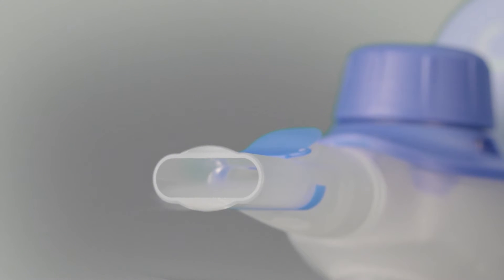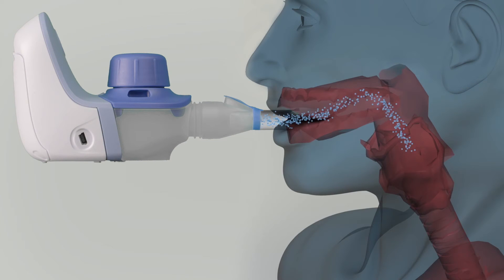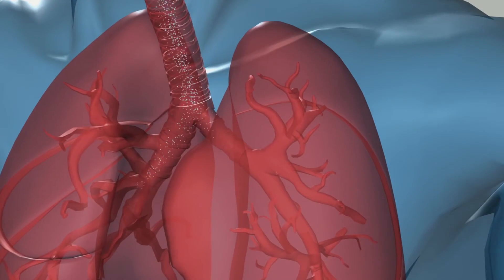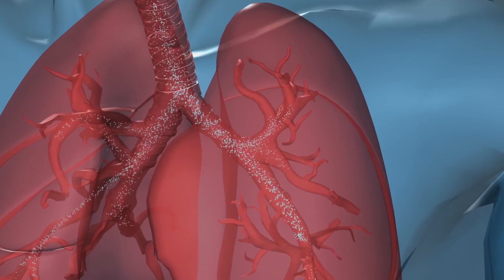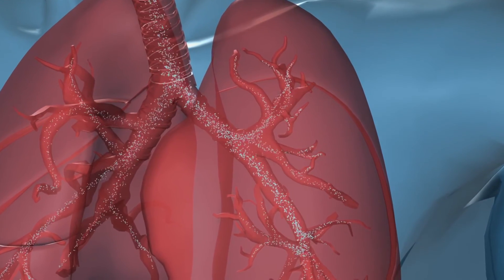Place the mouthpiece in your mouth and hold the device horizontally. Slowly breathe in and out. This is how the aerosol reaches your lungs and is able to be effective exactly where it is needed.